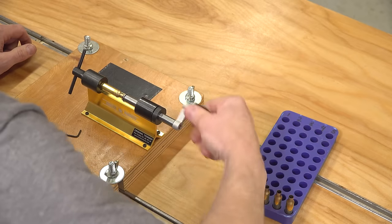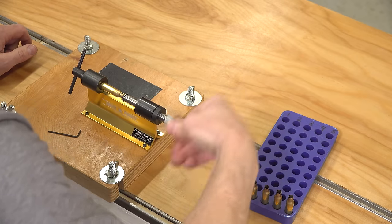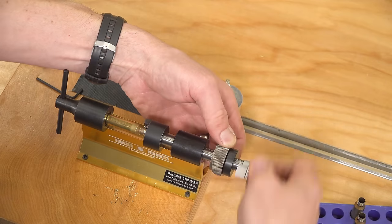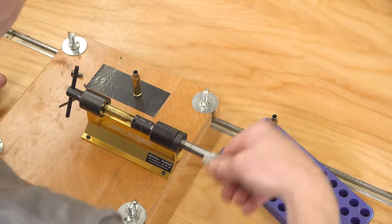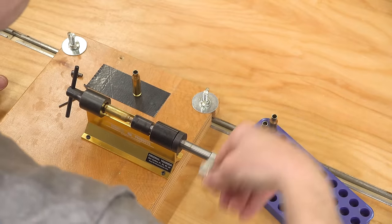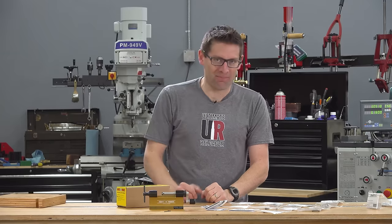We're going to do some basic case trimming and then we're going to look at outside neck turning and we're going to look at using their three-way cutter to cut, chamfer, deburr all in one step. Let's get going.